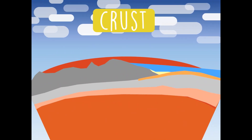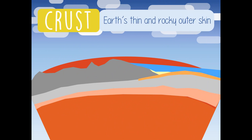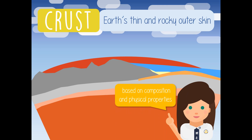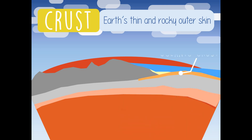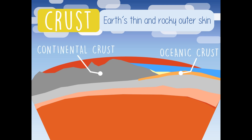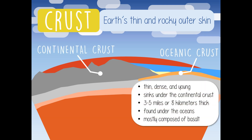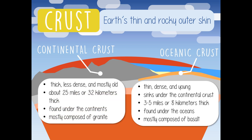First is the earth's thin and rocky outer skin called the crust. It is divided into two types based on composition and physical properties: the oceanic and continental crust. The oceanic crust is a thin, dense, and young crust that sinks under the continental crust. It is only about 3 to 5 miles or 8 kilometers thick, found under the oceans, and is mostly composed of basalt. The continental crust is thick, less dense, and mostly old. It is about 25 miles or 32 kilometers thick under the continents and mostly composed of granite.